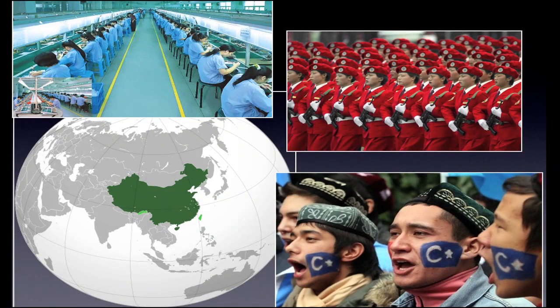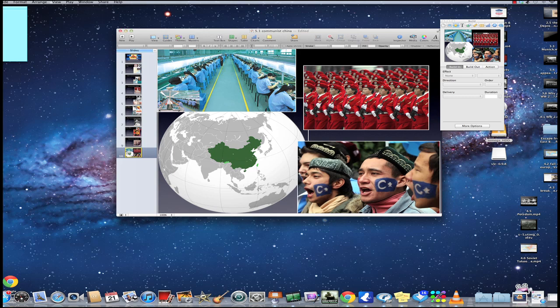Moving on to 2011, China has gone from strength to strength economically, with relatively little protest since 1989 — perhaps because of the increase in wealth throughout China. It is now a major centre of manufacturing and the second largest economy in the world. The Communist Party still controls the political life of the country. There are some issues around ethnic minorities and future challenges such as climate change, as there are in every country. I hope you've got some idea of some elements of the history of Communist China. Good luck with the quiz.